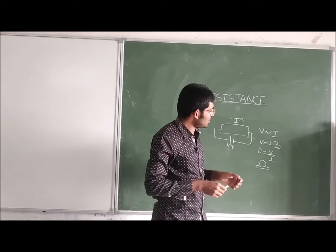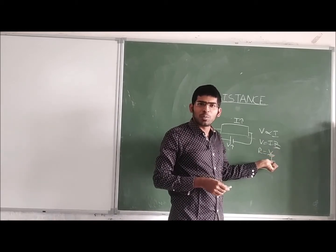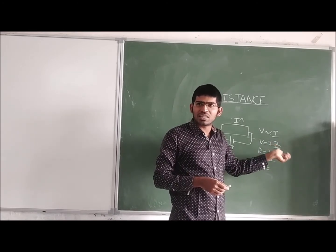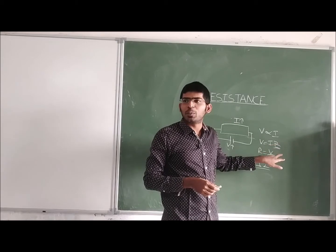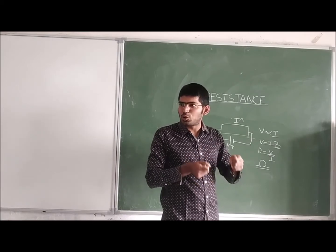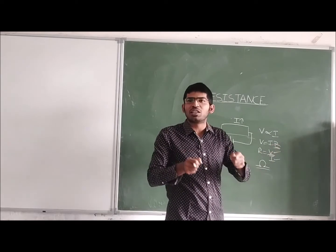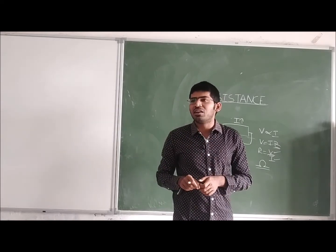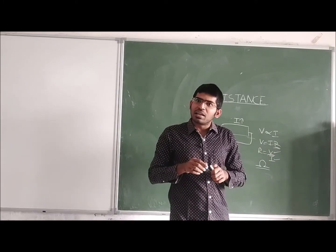The resistance of a material, according to Ohm, is defined as the ratio of the voltage applied to that material to the current flowing through it. To measure this resistance in the laboratory, we have a voltmeter to measure the voltage applied and an ammeter to measure the current flowing through that material, and we can finally find what is the resistance of the material.